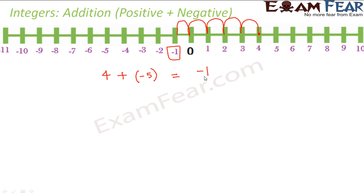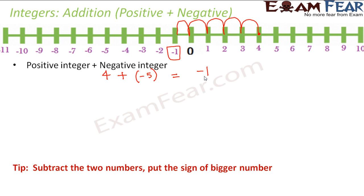Here is a simple tip: whenever you have one positive number and one negative number, just subtract the two numbers. In this case you have 4 and minus 5 — forget the signs and find the difference: 5 minus 4 equals 1. Then put the sign of the bigger number. The value 5 is bigger and it carries a negative sign, so the result is negative.